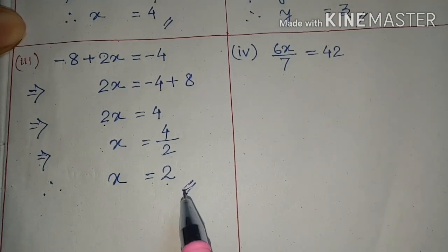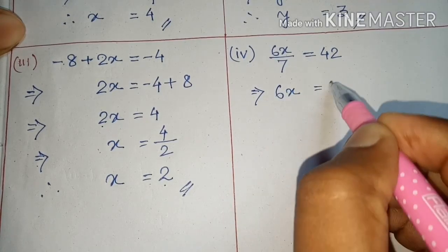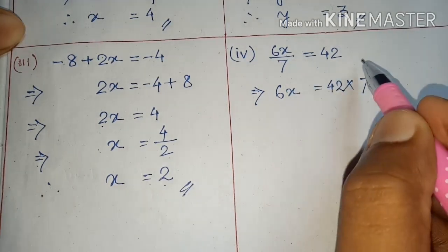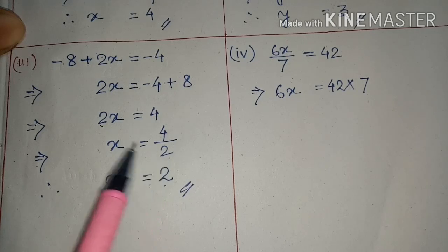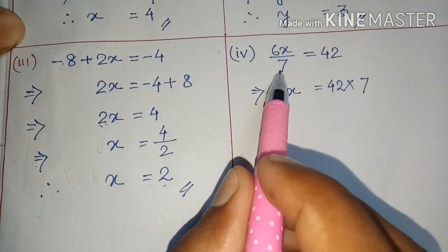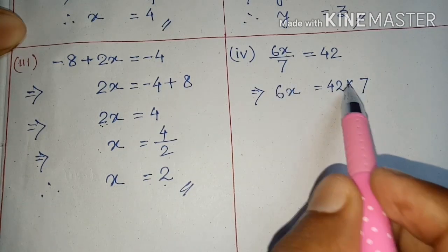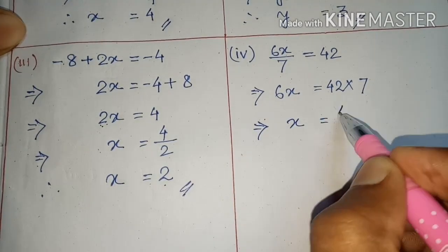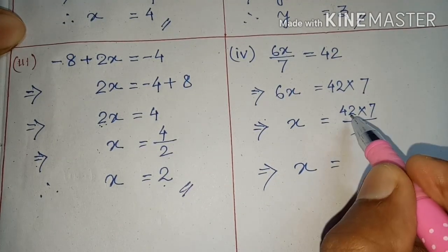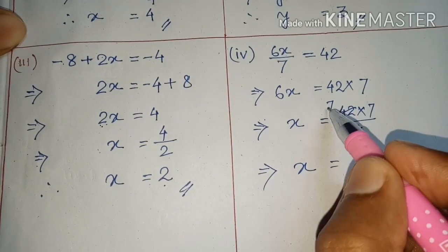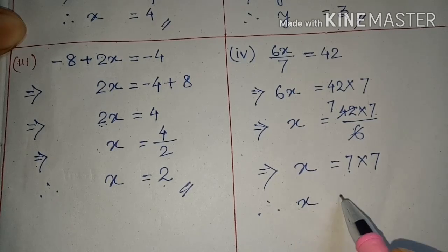Next it will be: 6x divided by 7 equals 42. So 6x equals 42 into 7. Then x equals 42 into 7 divided by 6. 7 into 7 is 49, so x equals 42 into 7 divided by 6, giving us x equals 49.